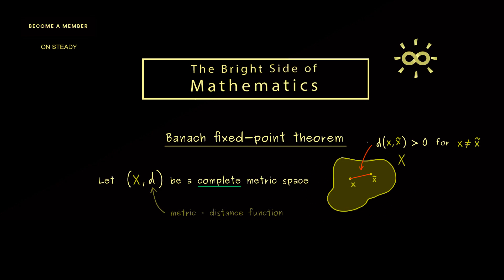Which means we can consider sequences, and terms like convergence and Cauchy sequences make sense. Therefore completeness here means exactly the same as for real numbers — it simply says that all possible Cauchy sequences are actually convergent sequences. Often we simply say that completeness means there are no holes in the space.